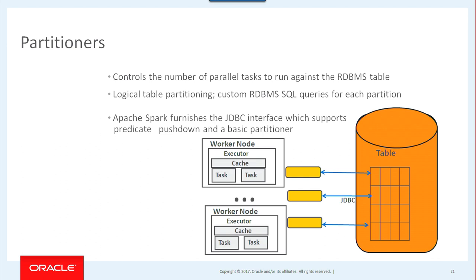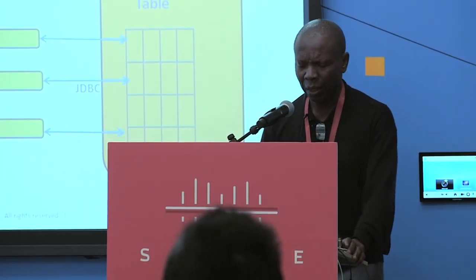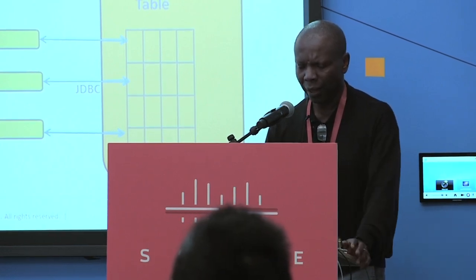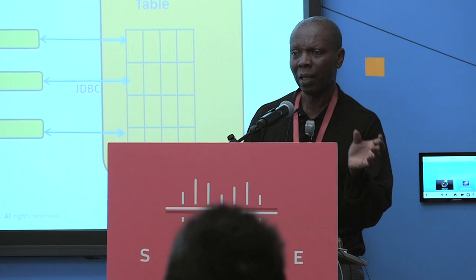How do you manage to have parallel access to one single table in your RDBMS? I'm not talking about sharded databases — that's something we also need to look at when you have multiple shards on separate databases. But for a single table, you need to do some logical partitioning. In the Spark framework, they provision something called partitioners. Partitioners allow you to do logical partitioning of the table. For example, if you have 100 Spark nodes, you want 100 simultaneous connections to the database accessing that same table. Spark itself furnishes a JDBC interface with predicate pushdown.